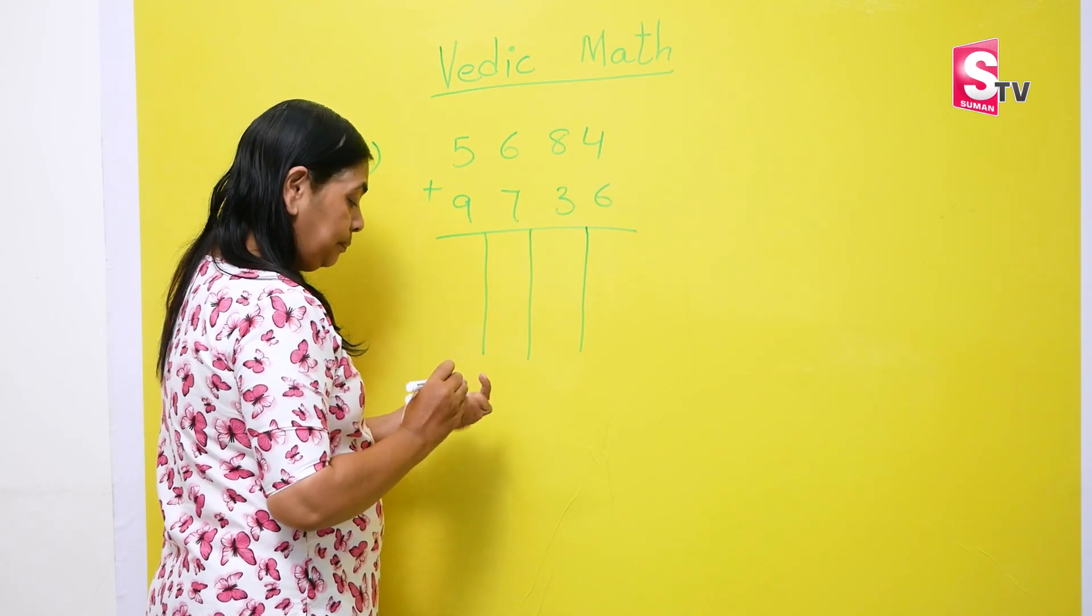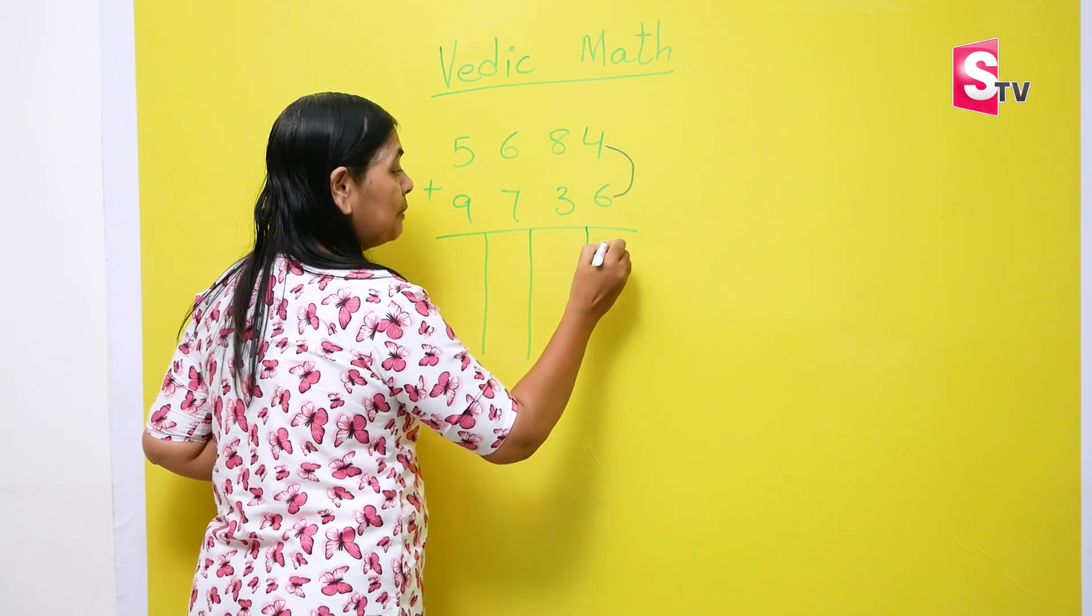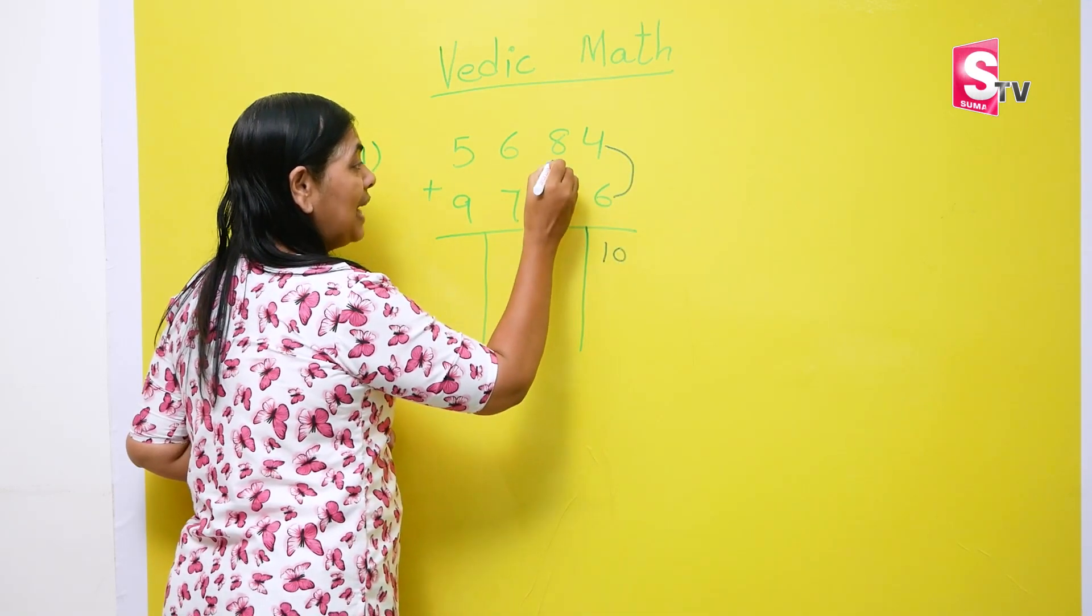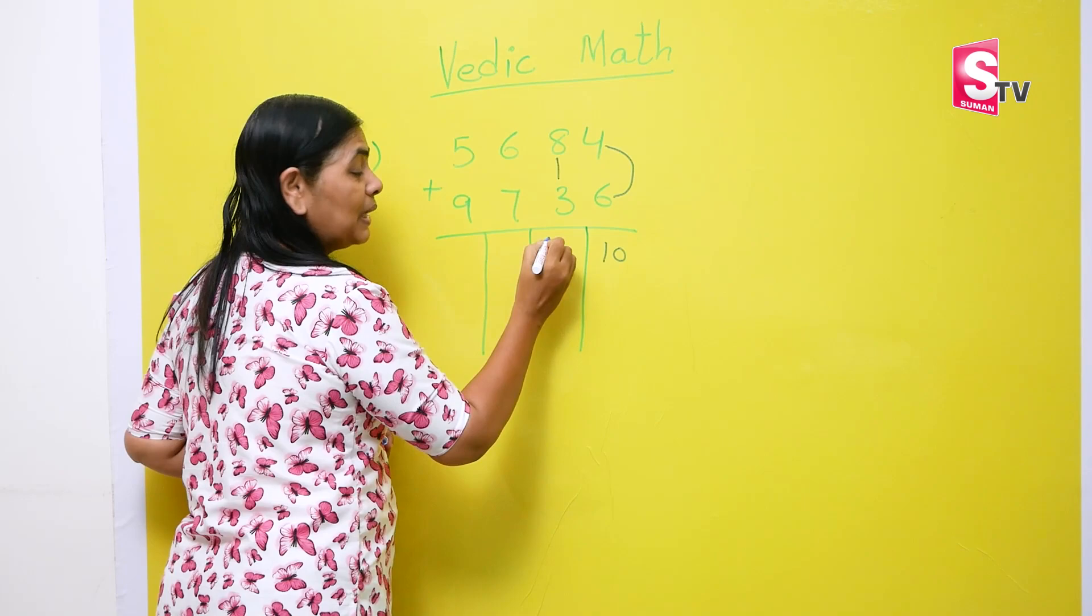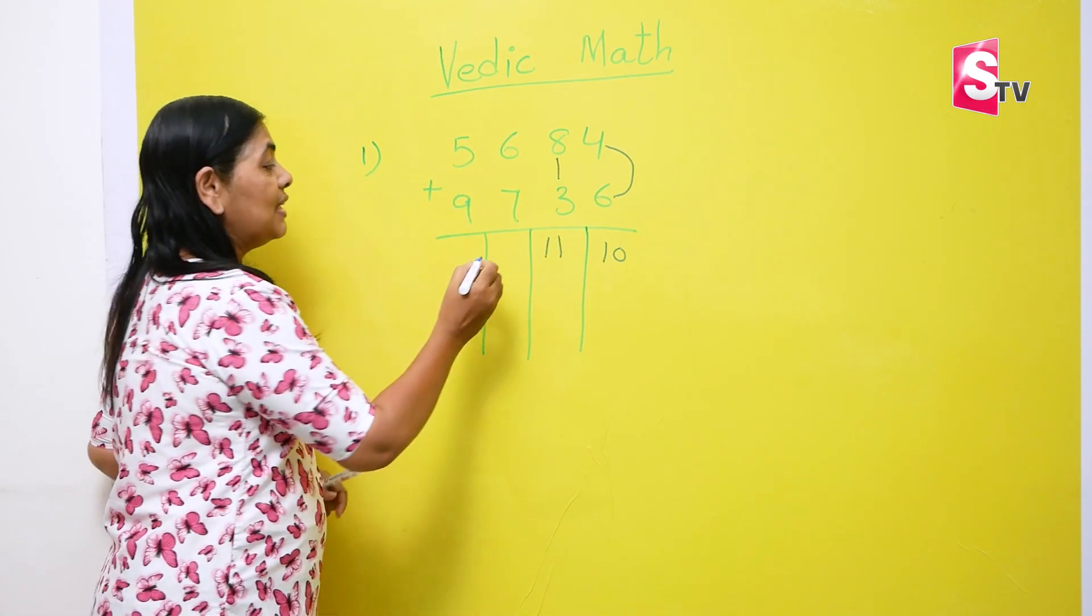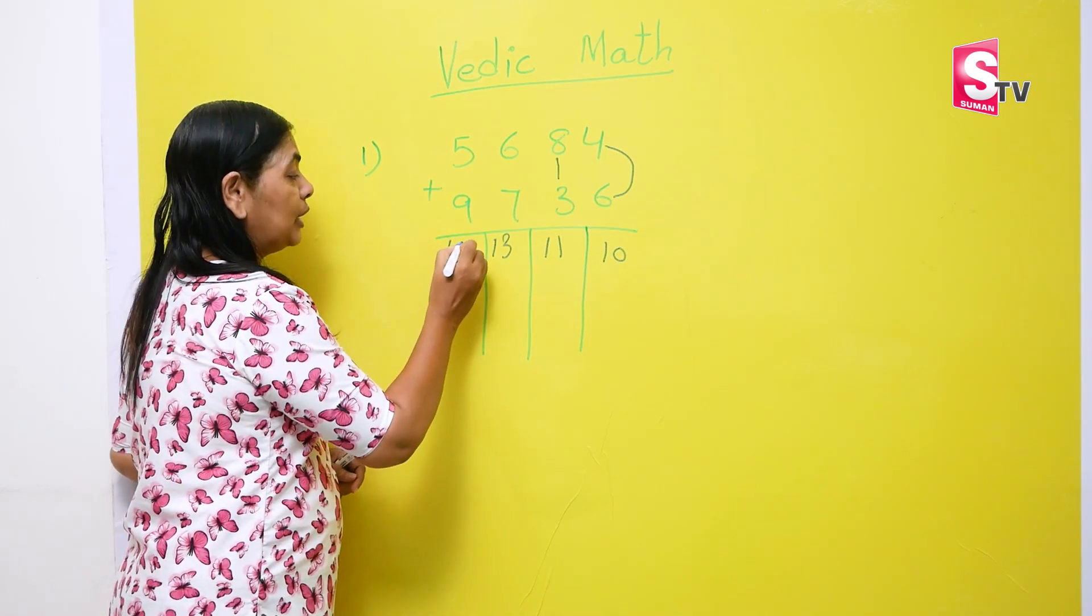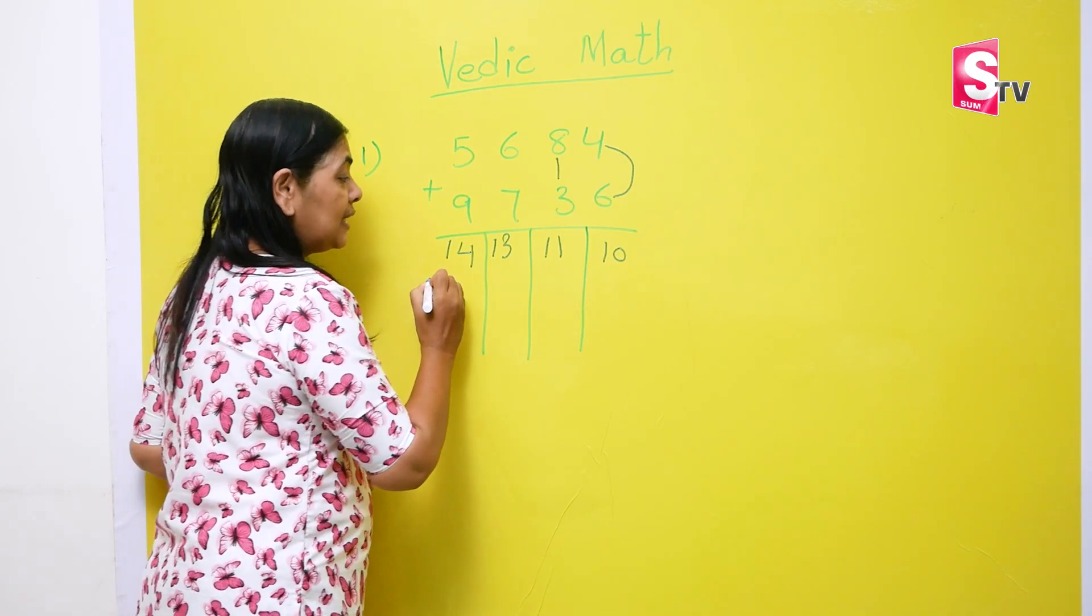What we'll be doing is, we'll be adding 6 plus 4. So when we add 6 plus 4, this becomes 10. When we add 8 and 3, this becomes 11. When we add 6 and 7, this becomes 13. And when we add 9 and 5, this becomes 14.